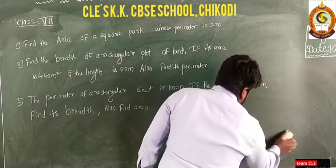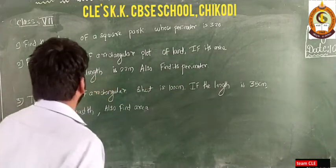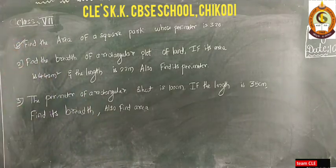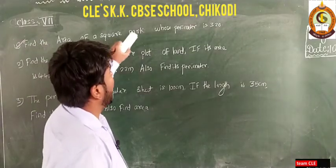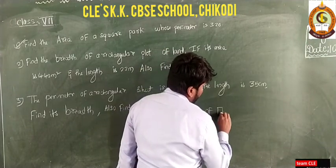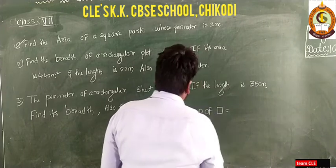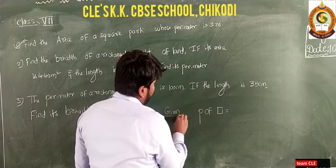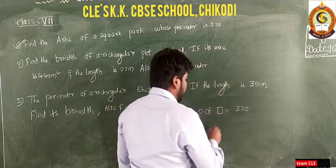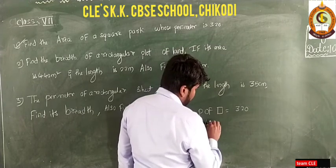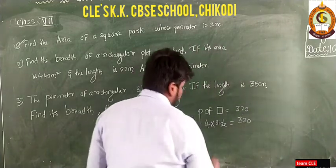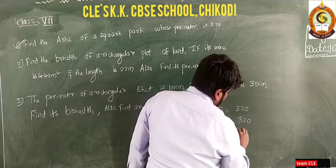First question: find the area of a square park whose perimeter is 320 meters. Given that perimeter of square equals 320. We know the formula: perimeter of square equals four into side. So four into side equals 320, which means side equals 320 divided by 4.